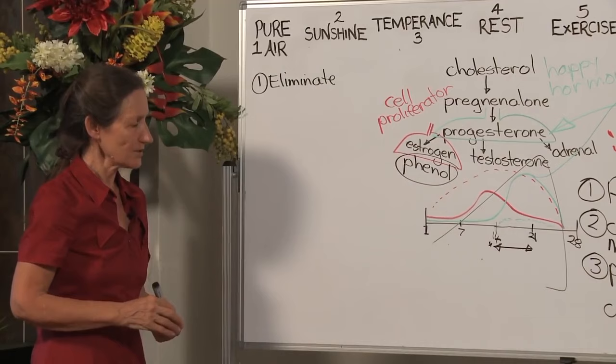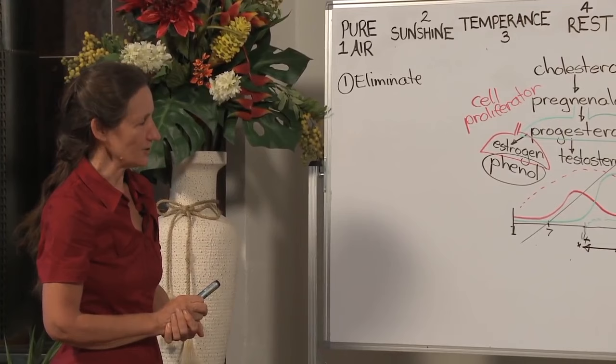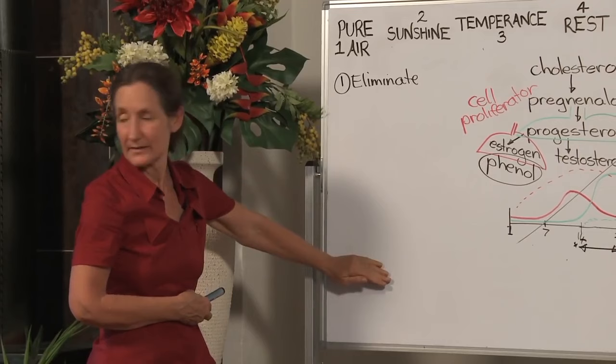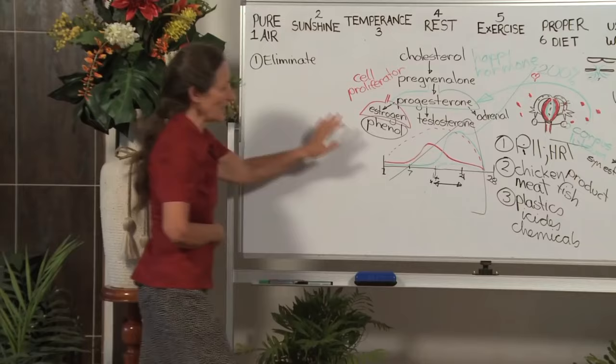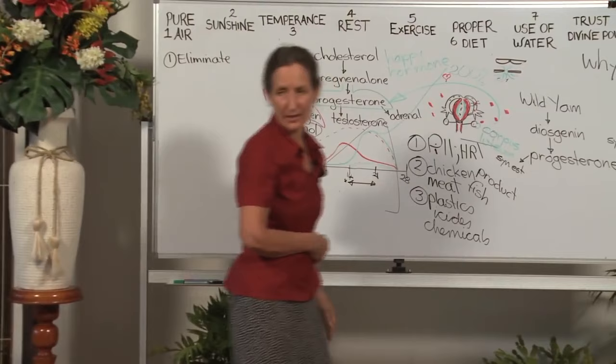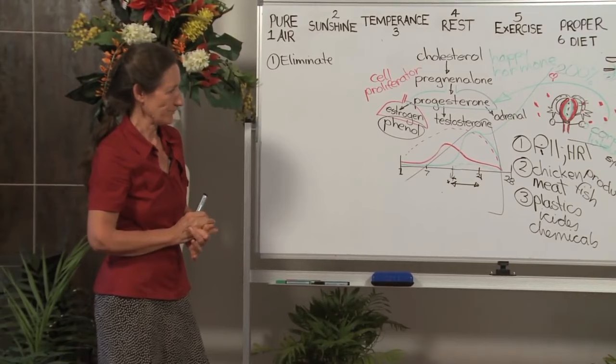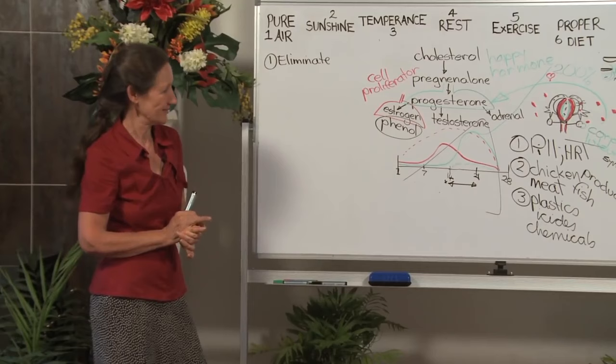So that's how the pill can be eliminated. HRT - when this is implemented, this list that I'm giving you now, I have seen many get off hormone replacement therapy. Eliminate meat and its products. If you like meat and its products, it really should be organic. At Misty Mountain Health Retreat, we show you how to make lentils taste fantastic.